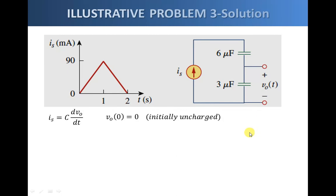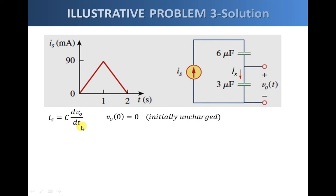The current through the series capacitors is related to the time rate of change of voltage across the equivalent capacitance: i_s equals C times dV/dt, where V_o is the voltage across the three microfarad capacitor. We further assume that the three microfarad capacitor has no initial charge.